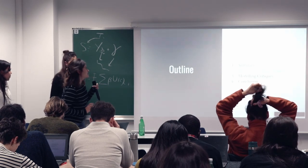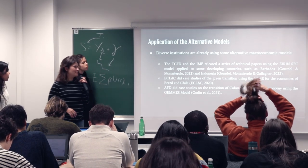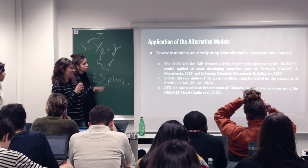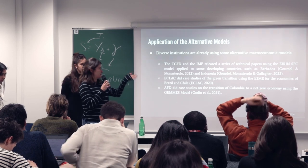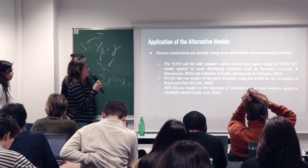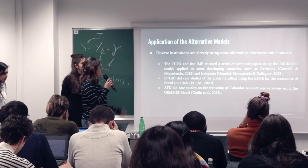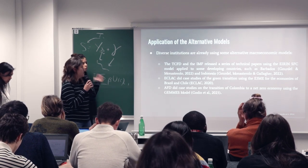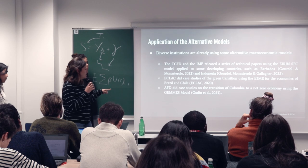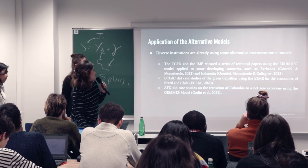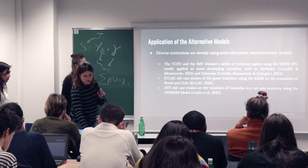Now we move to the second part of our presentation about the application of the models. The authors highlighted models being developed in various institutions. TCFD and IMF have technical papers using the IRIN model for countries such as Barbados and Indonesia. ECLAC is applying E3ME to Brazil and Chile. AFD is using the Colombian case to apply the GEMS model, as we saw in a former seminar with Antoine Godin. What are the differences of these models compared to a mainstream econometric model?